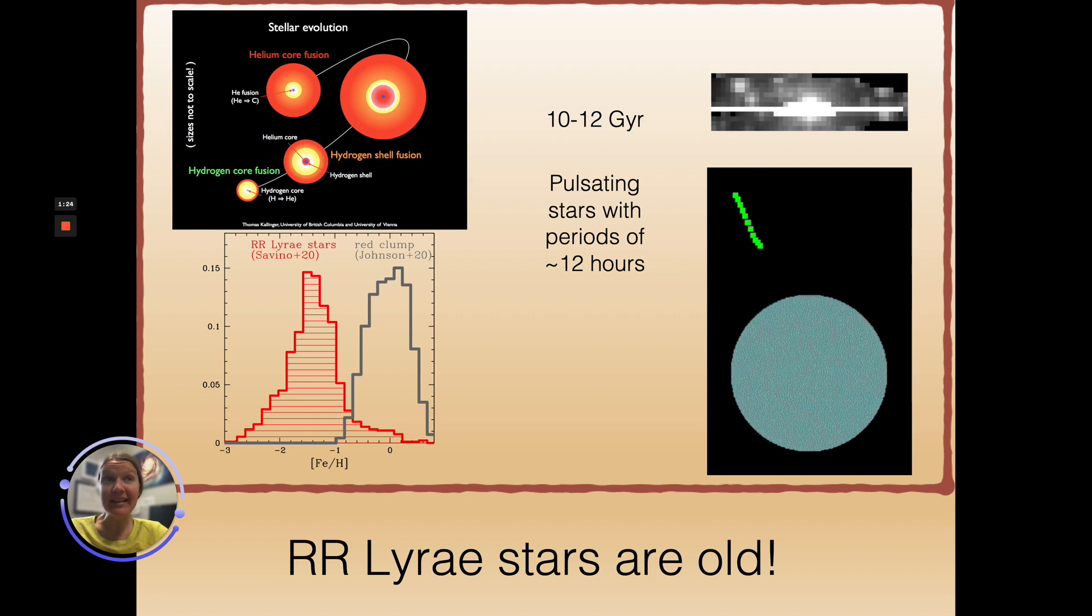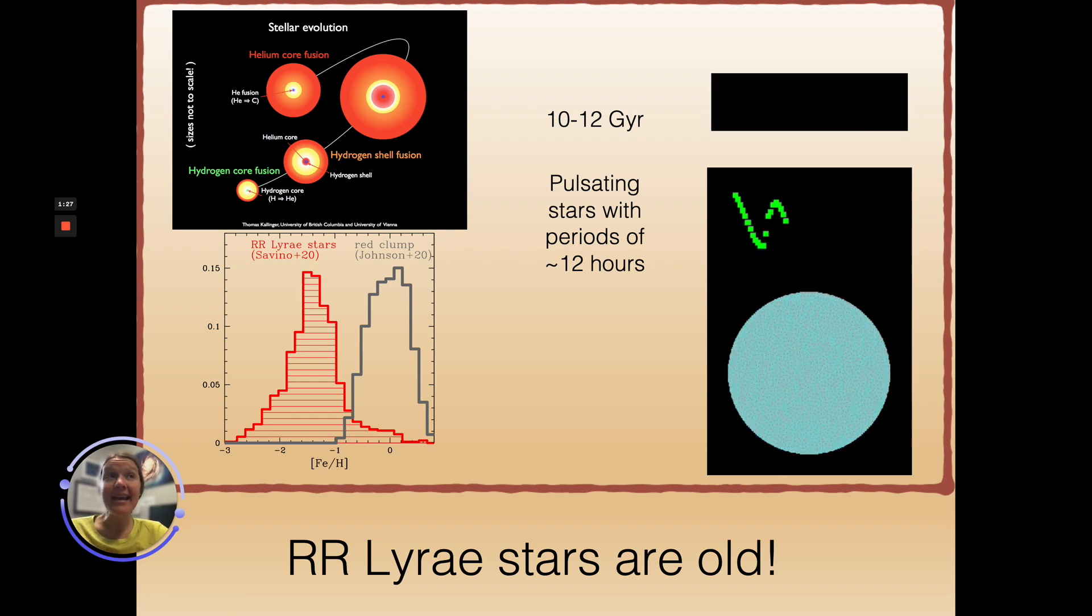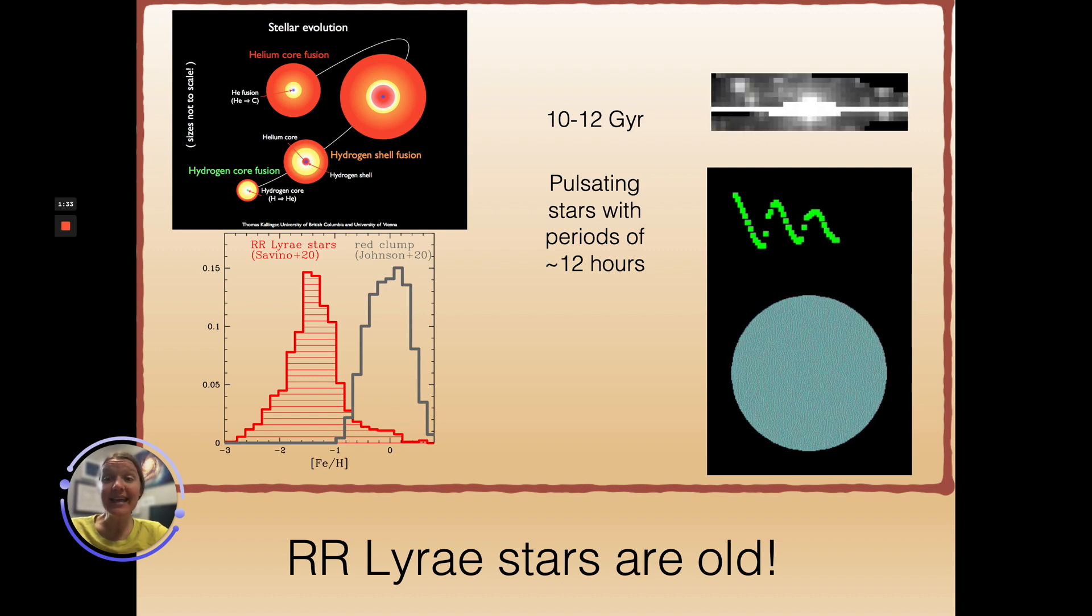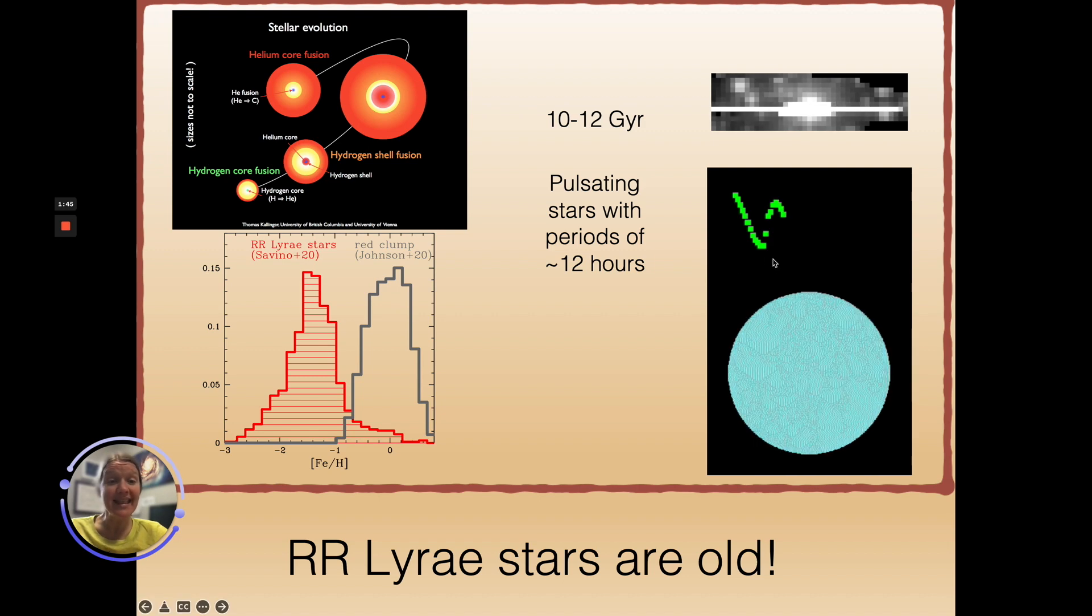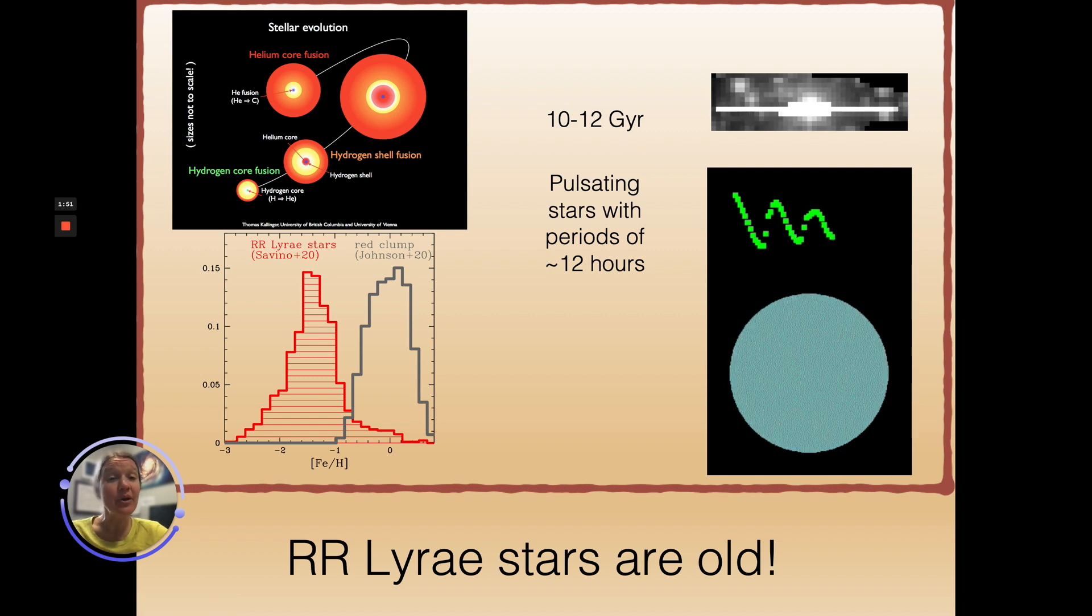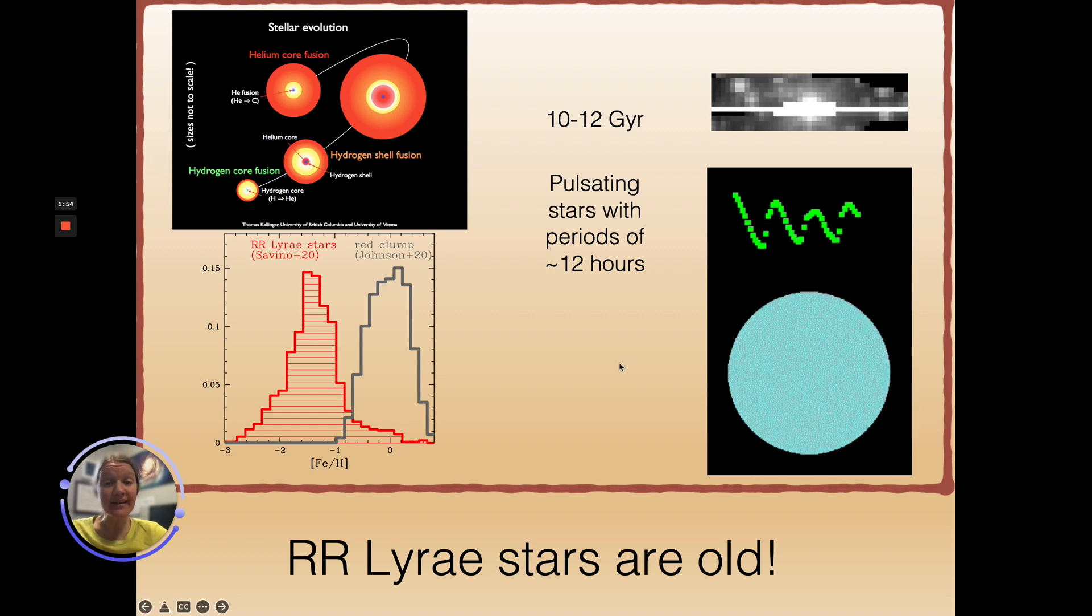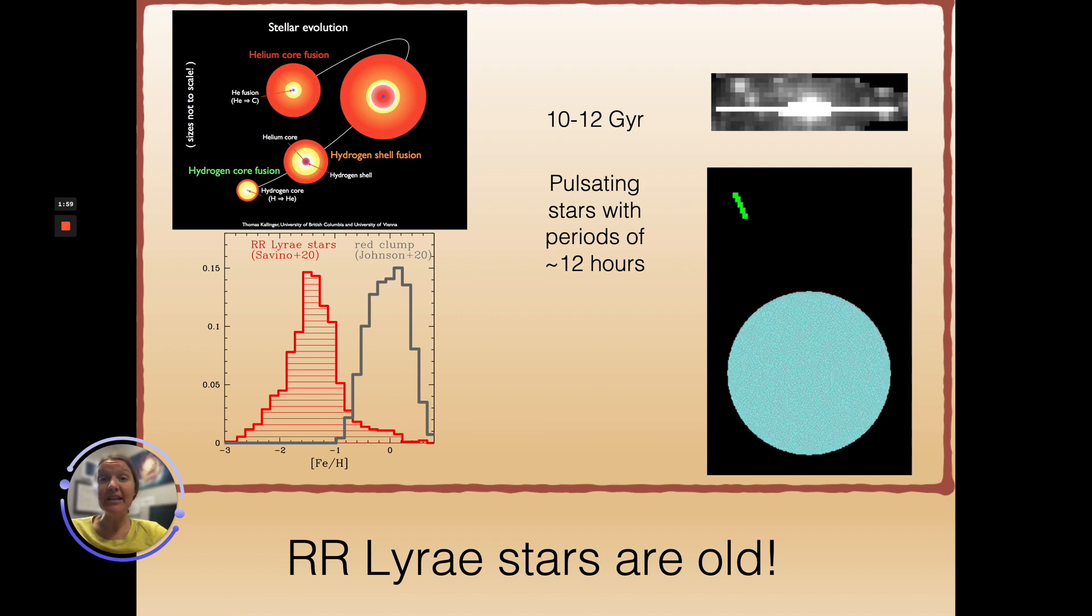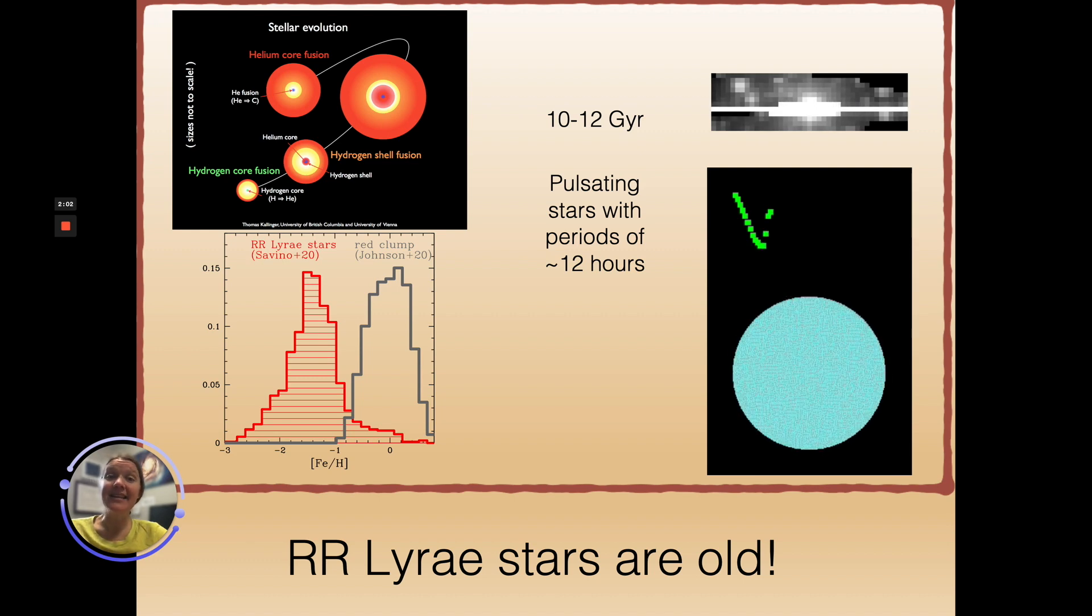RR Lyrae stars started their life as low-mass stars. They exhausted the hydrogen in their core, moved up the giant branch, and are now on the horizontal branch, fusing helium in their core. They reside on a part of the horizontal branch that crosses the instability strip, and so these stars radially pulsate. This is great because one can identify them in photometric surveys. They have a typical sawtooth shape as the star gets larger and smaller and brighter and dimmer over time, and they pulsate with periods of about 12 hours.